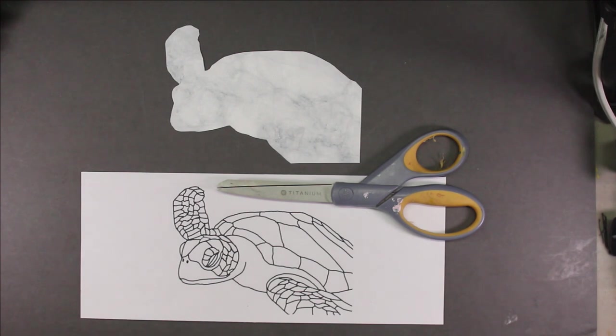I cut the shape out with scissors and here I'm showing how it looks before I adhere it to the Yupo paper.